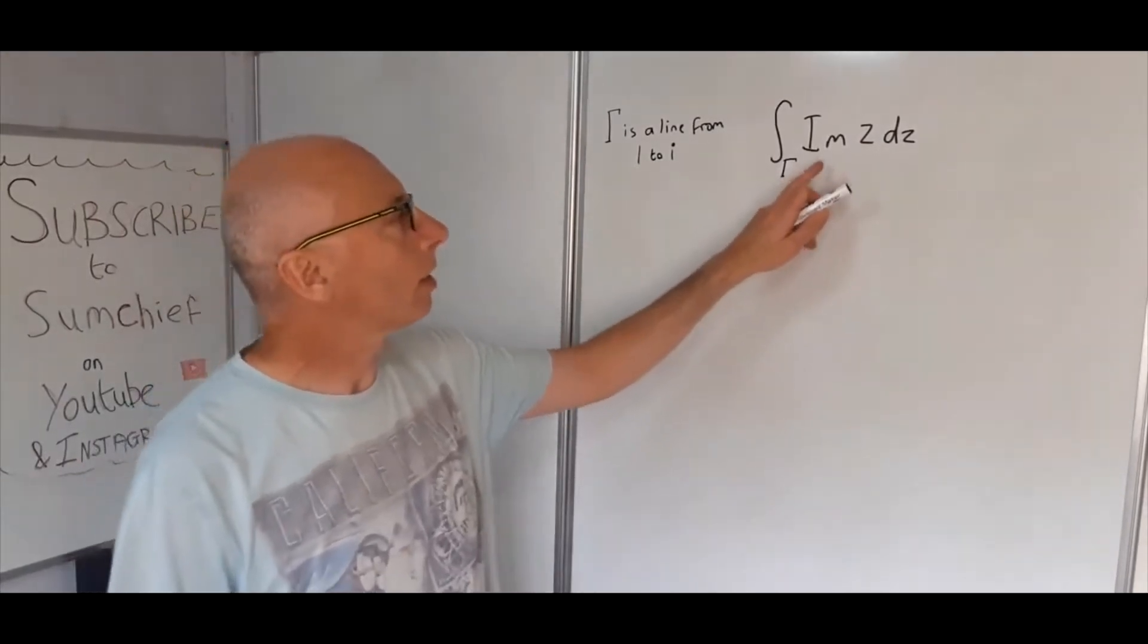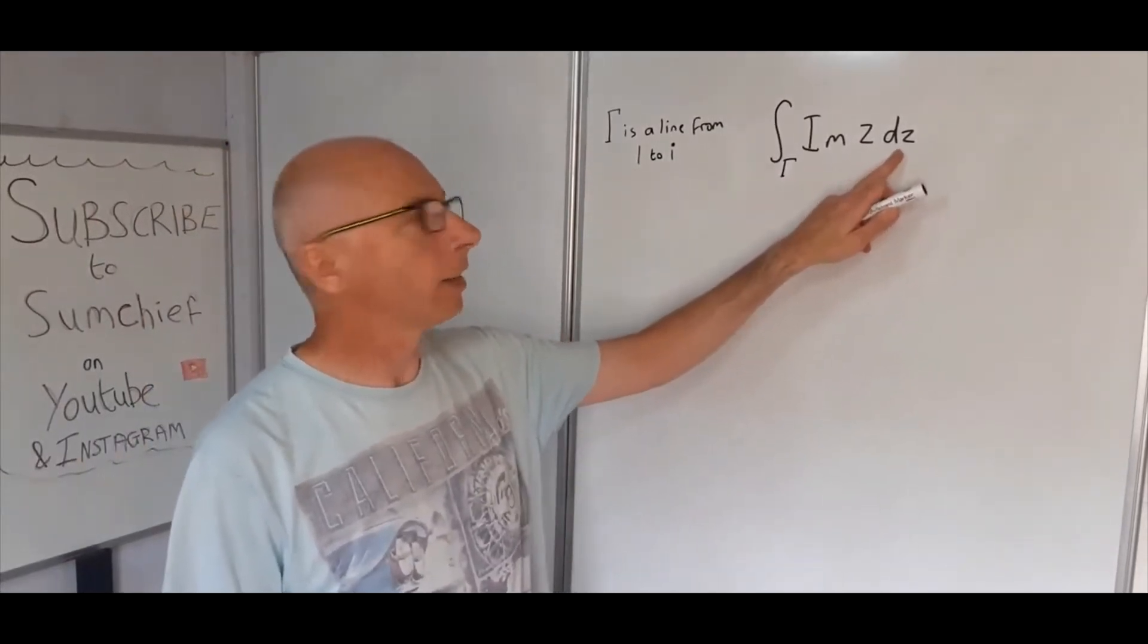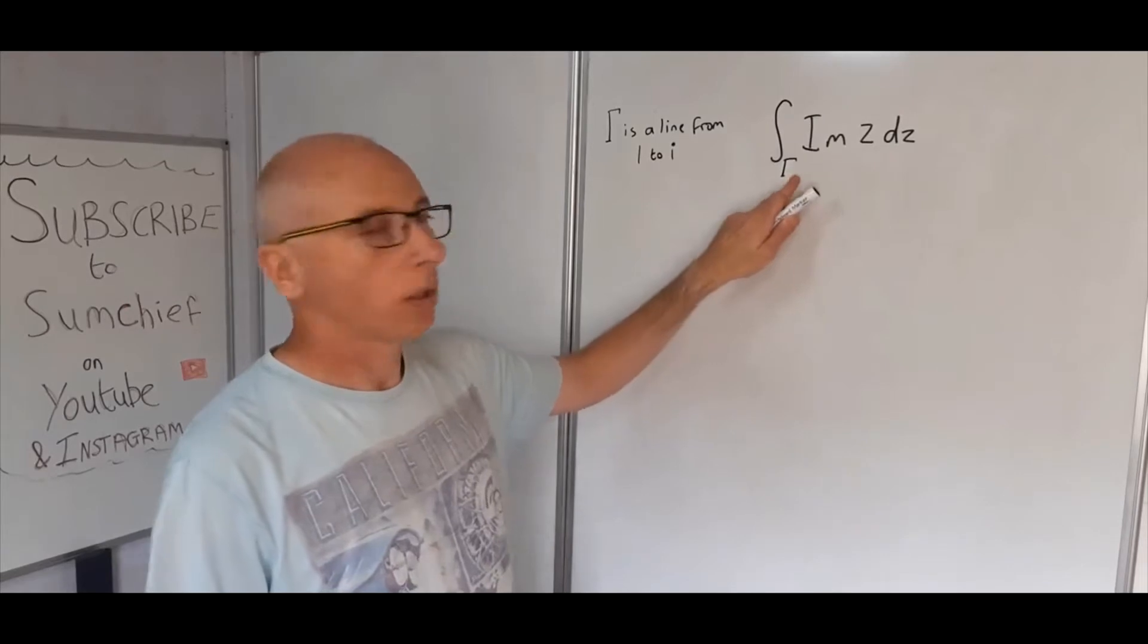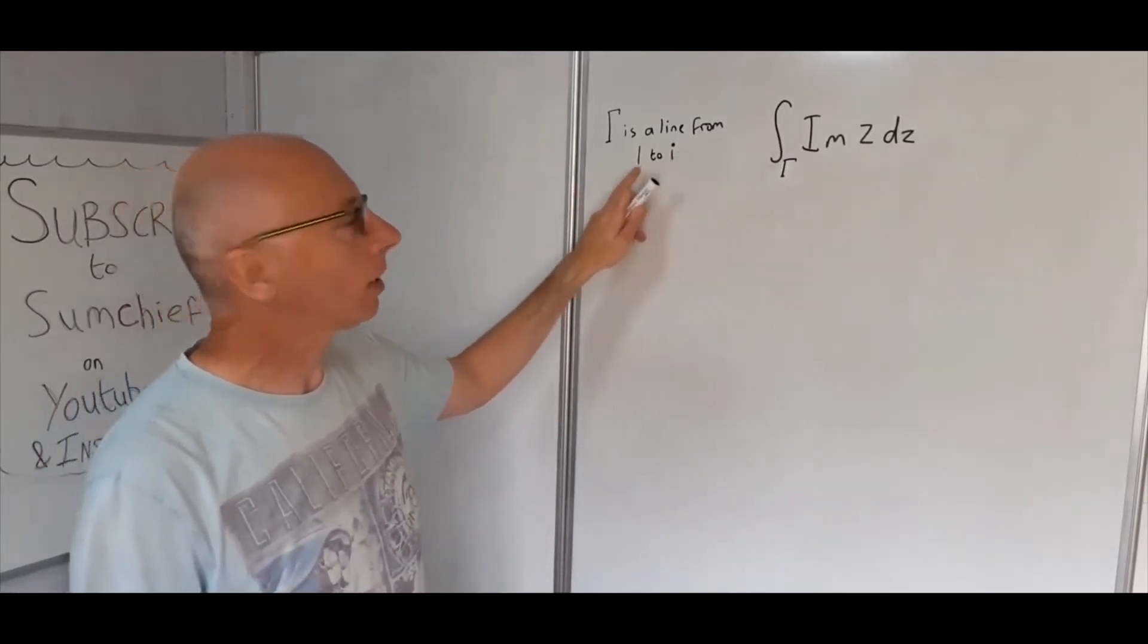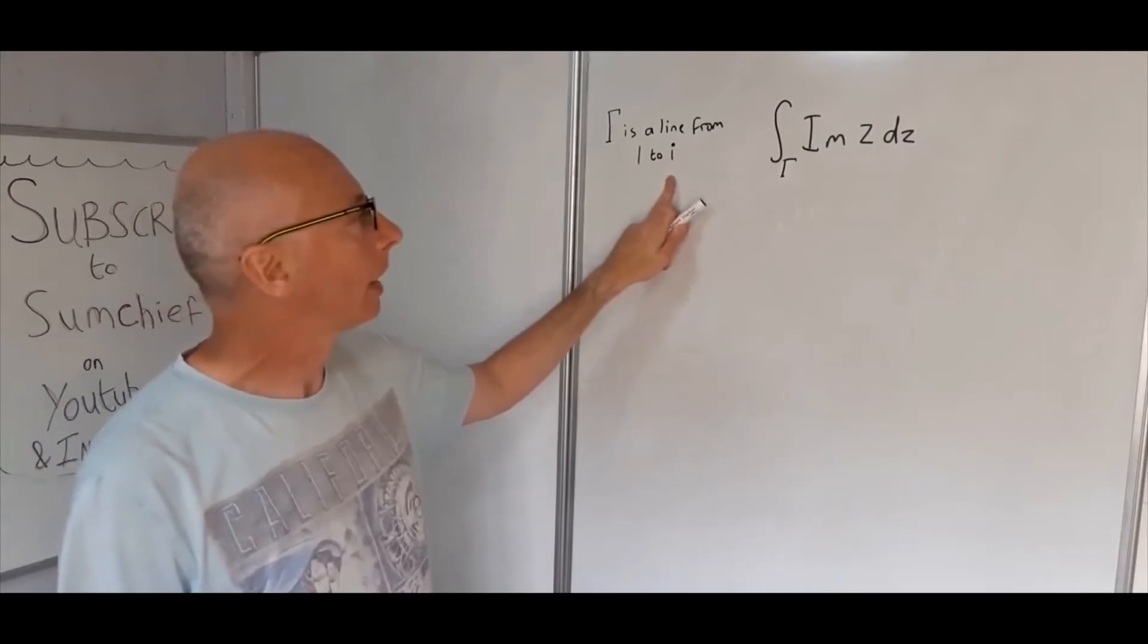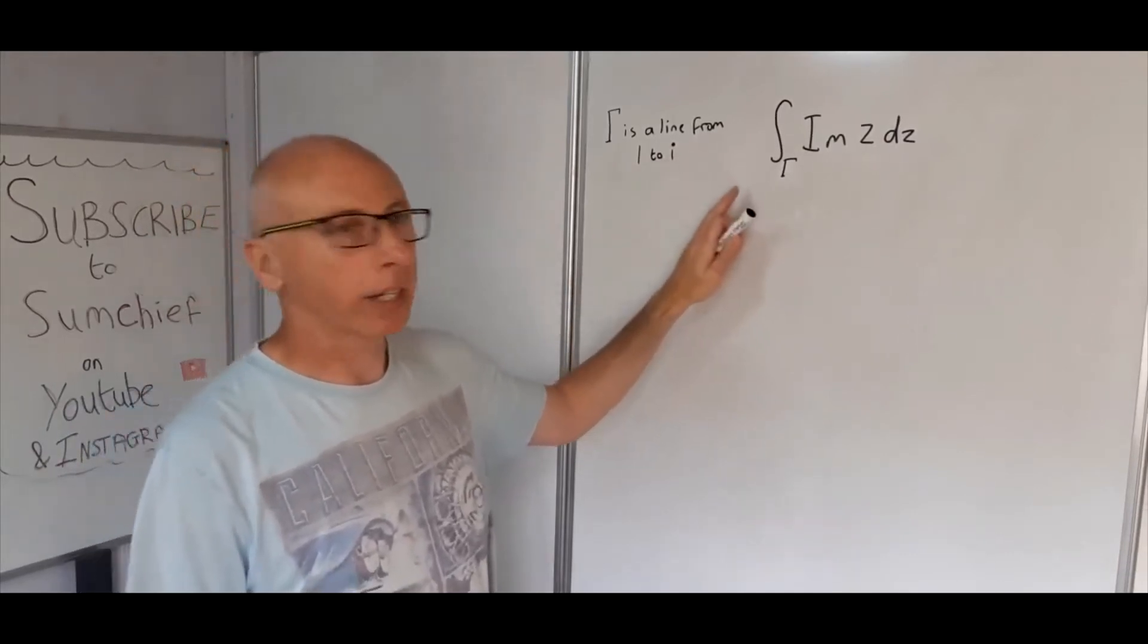In this video we're going to integrate the imaginary value of z with respect to z within gamma, and gamma is given as just a straight line from 1 to i. So how are we going to go about integrating this?